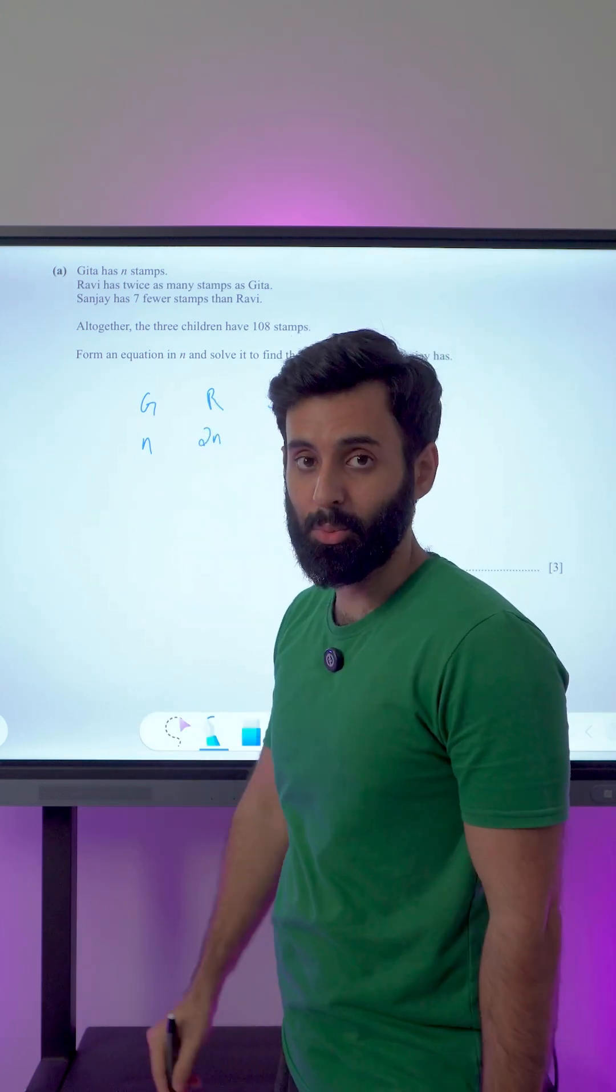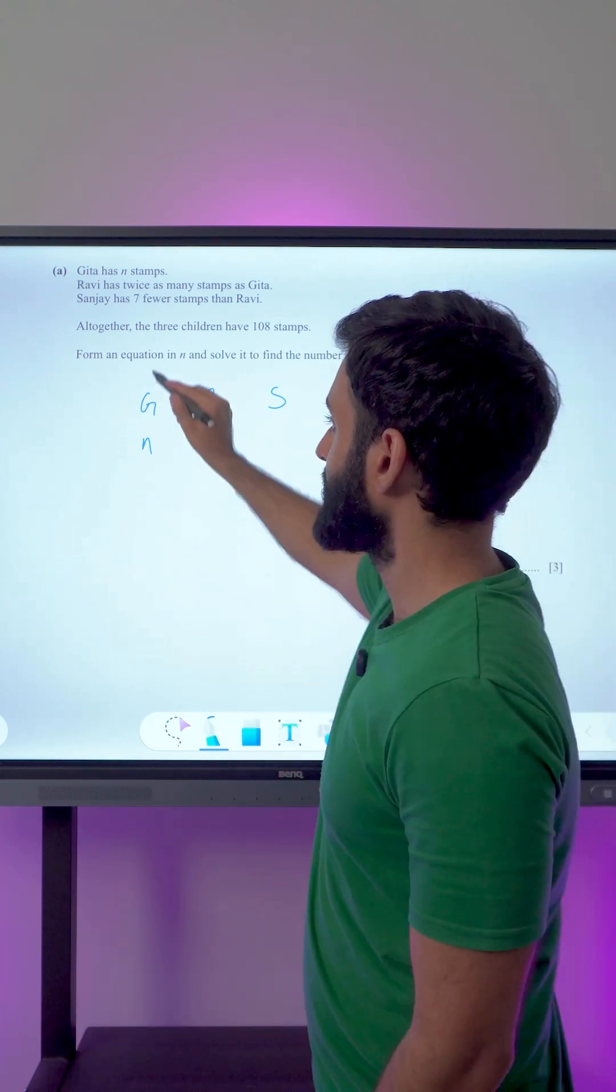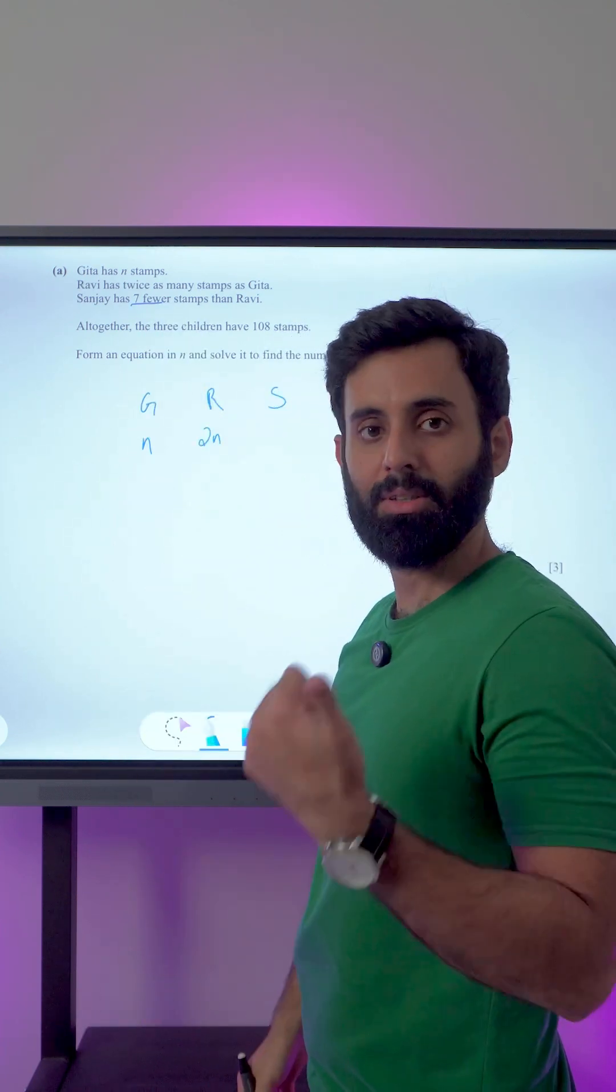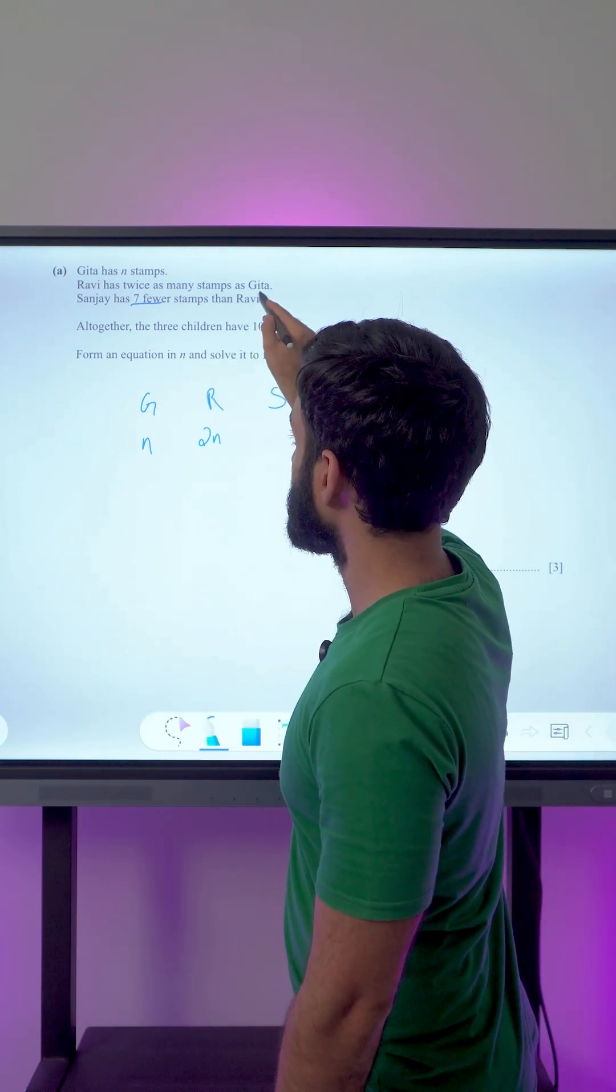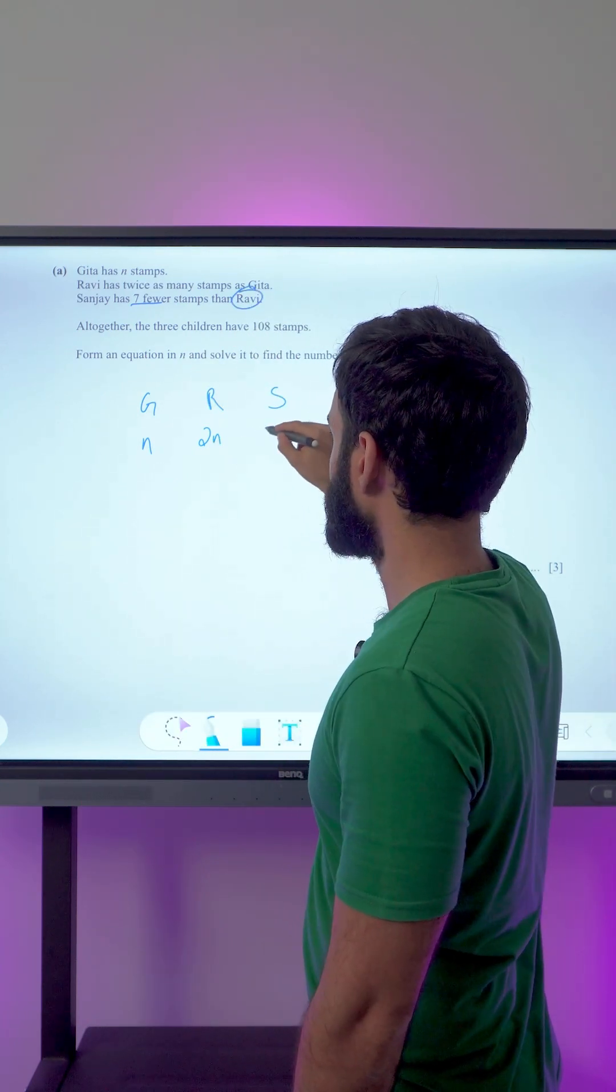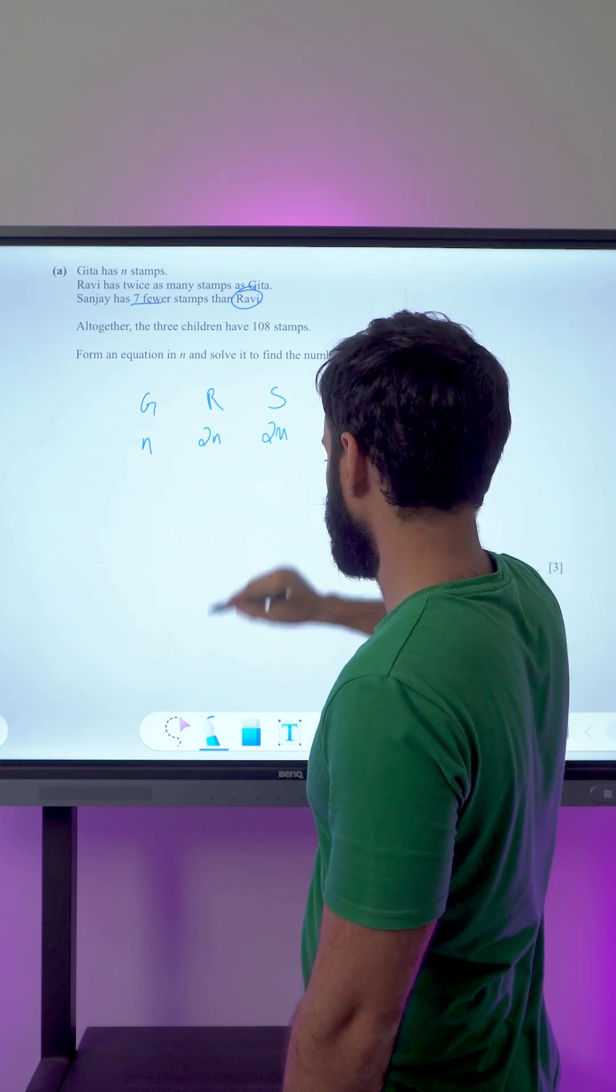Sanjay has seven fewer stamps. Fewer, less, all of that basically means minus. So seven fewer than what? Seven fewer than Ravi. So that means if Ravi has 2n, Sanjay has 2n minus seven.